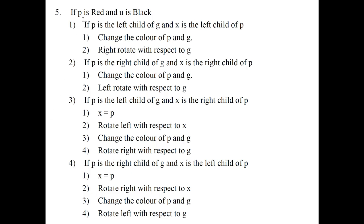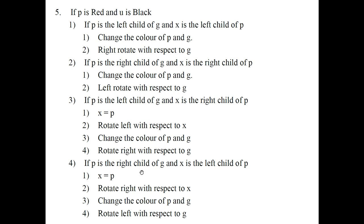When the parent is red and the uncle is black, there are four sub-cases. First case: grandparent's left child is parent, parent's left child is X — left-left. Second case: grandparent's right child is parent, parent's right child is X — right-right. Third case: grandparent's left child is parent, parent's right child is X — left-right. Fourth case: grandparent's right child is parent, parent's left child is X — right-left.